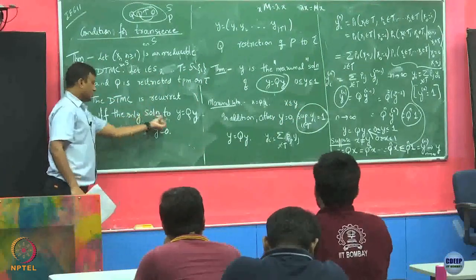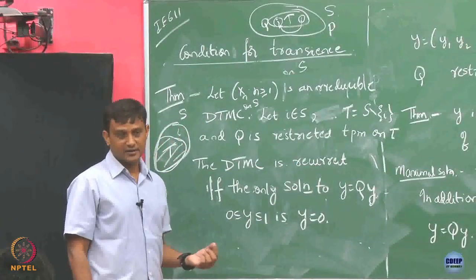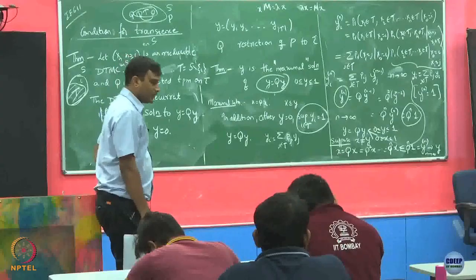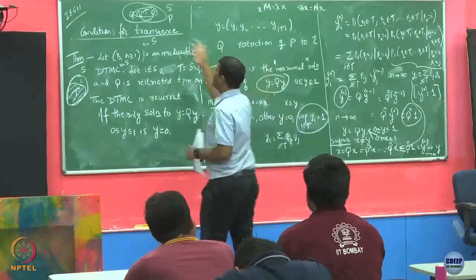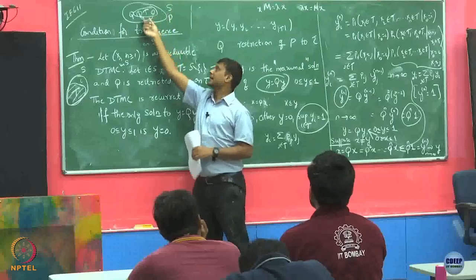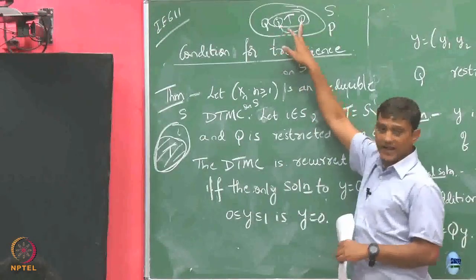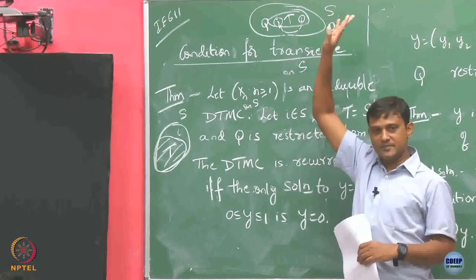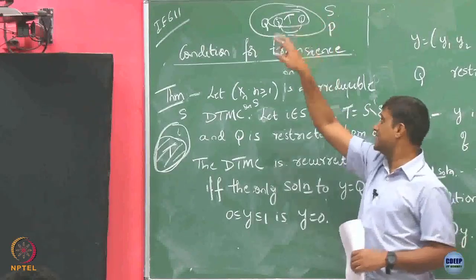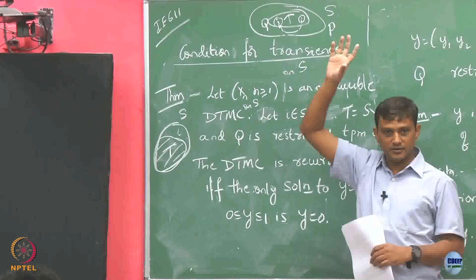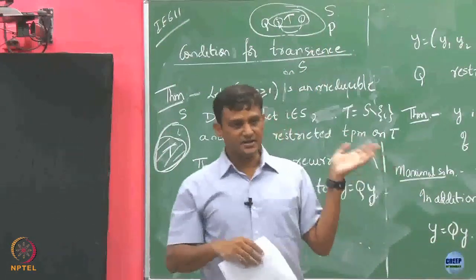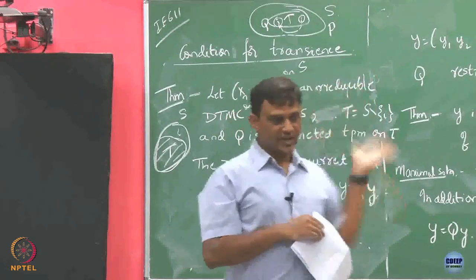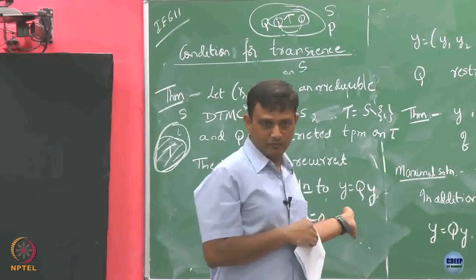If Y equals 0, then starting with any state i in this, the probability of remaining in class tau goes to 0. Based on these properties we now further classify states. So if Y naught is not equals to 0, there exists some i such that starting from that state in T, you remain in T with probability close to 1.